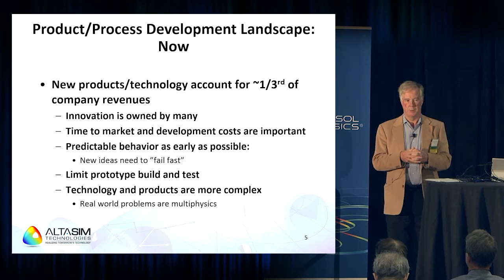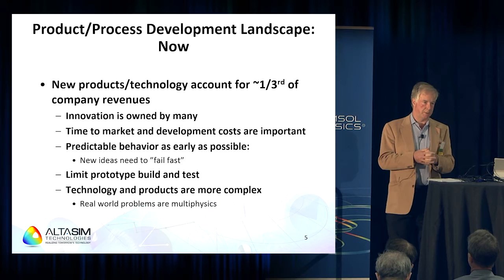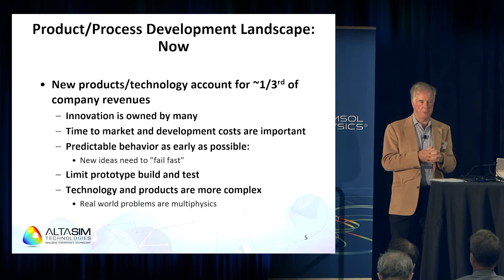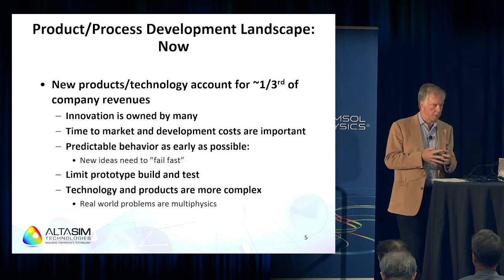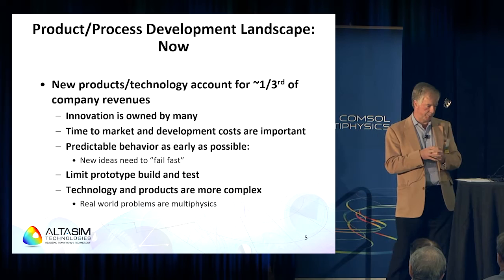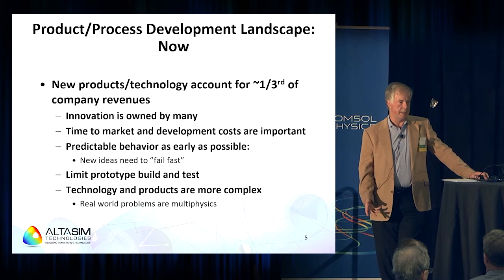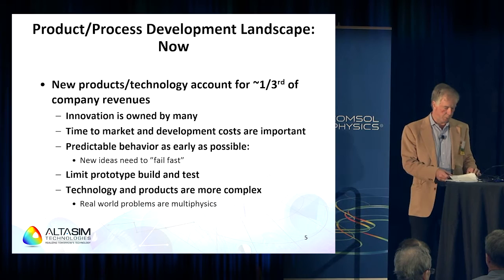Because of the rapid turnover required to maintain growth, time and cost of development become critical. You have to prove whether your technology is viable very early — the concept of 'fail fast' — before you've made a massive investment in physical prototypes, physical plant, or marketing. This has led to trying to limit prototype building and testing. Technology is now much more complex; we're dealing with real-world problems that are inherently multi-physics, and you need to solve that multi-physics to move forward.